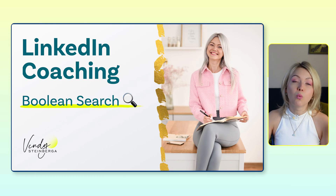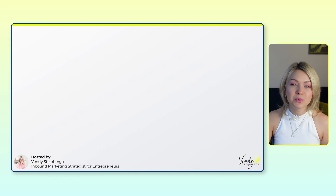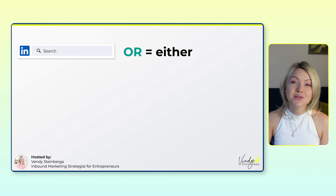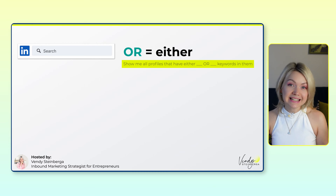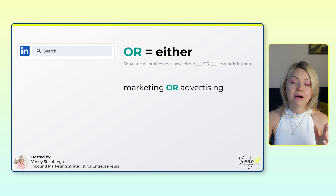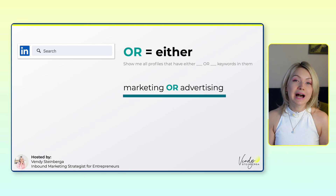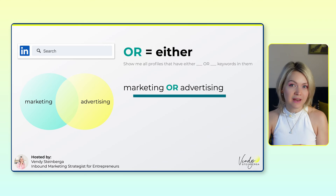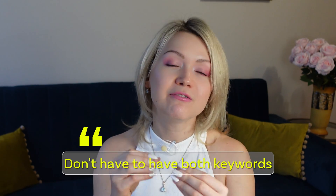Let me show you how these operators work one by one. Let's get started with the first operator, which is OR, and it means either. Whenever you use this operator, you're telling LinkedIn, show me all profiles that have either this or that keywords in them. For example, if I'm saying marketing OR advertising, I'm telling LinkedIn I'm looking for all profiles that have one of these keywords in them. The profiles don't have to have both keywords in one profile — as long as it has marketing or advertising, LinkedIn will deliver this in the search results.